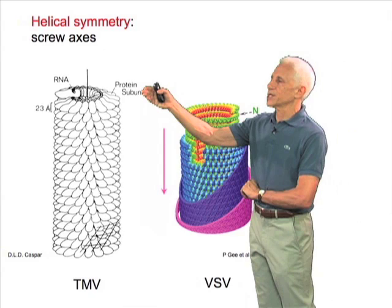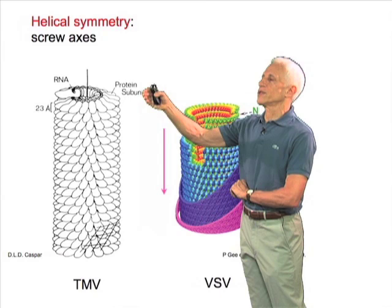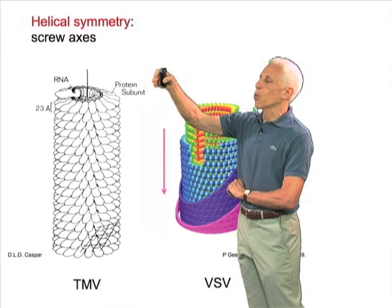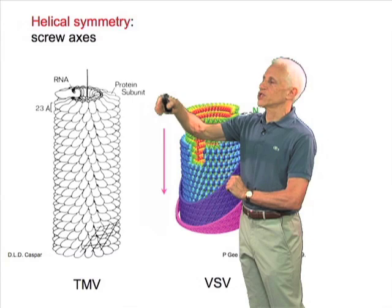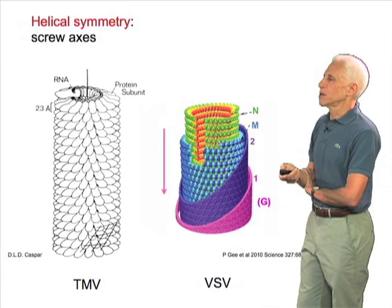...is a helical array in which the nucleic acid, the RNA, is wound into a groove on the protein subunit and winds up with the protein which forms this helical array.